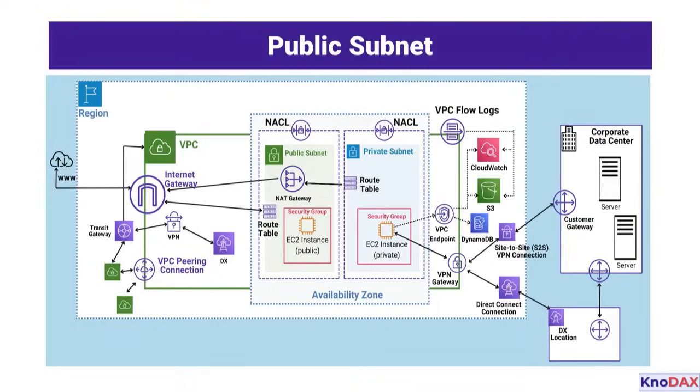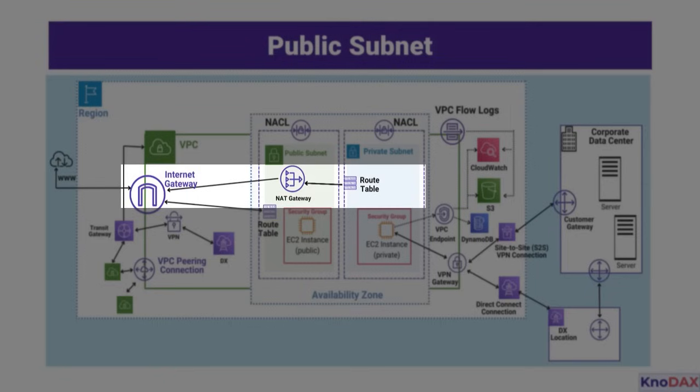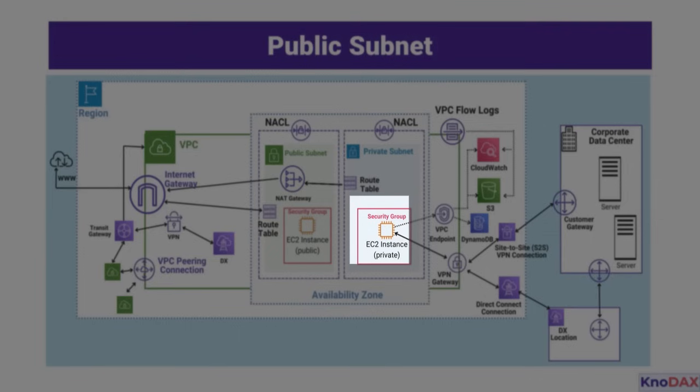A private subnet, on the other hand, does not have a direct route to the Internet Gateway and would typically use a NAT Gateway to access the Internet. EC2 instances, protected by security groups, handle public traffic.